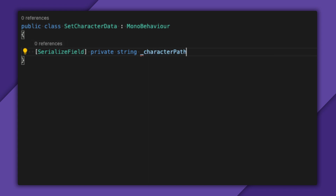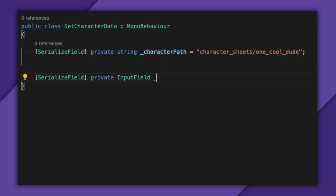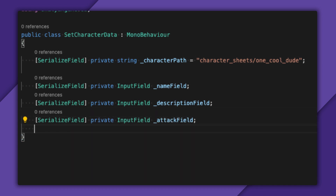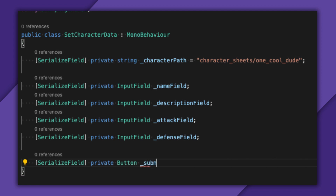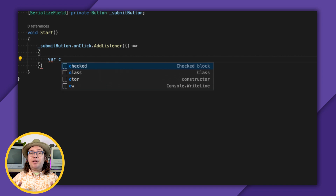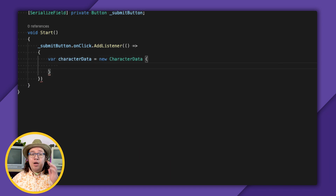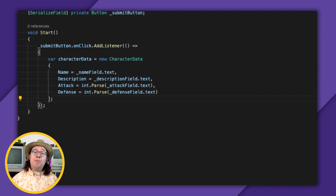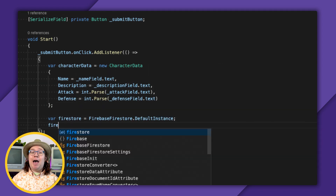First, I'll have a serialized string for the character path, where this lives in Firestore. I'll put a document named OneCoolDude in the collection Character Sheets for now, but it will be configurable in the editor. Then, I'll add an input field for each property in my player data — name, description, attack, and defense. Oh, and the submit button. When you click on the button, I'll create a characterData to upload and grab the name, description, attack, and defense, then upload it to Firestore at the character path I defined.